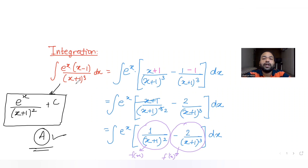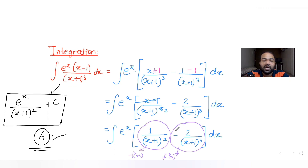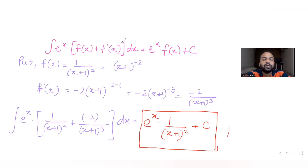What I did was: first, I separated the numerator (x minus 1) with the denominator (x plus 1) the whole cube, by just adding 1 and subtracting 1, so that one part of the expression gets cancelled. From the first part, I put it as f(x), and this gives me f'(x), which is the derivative of that expression.